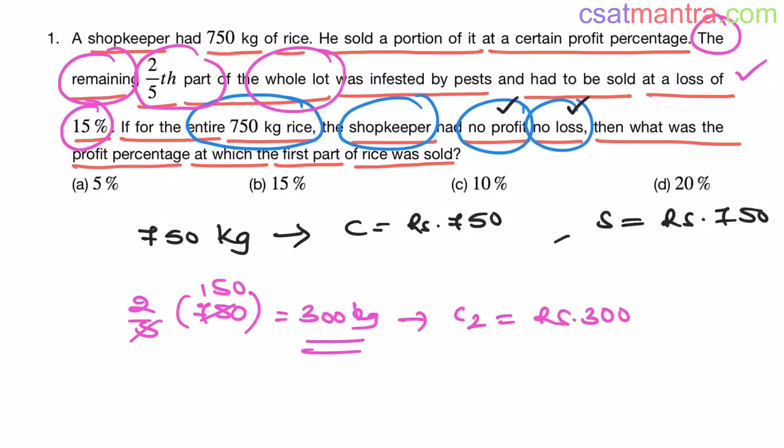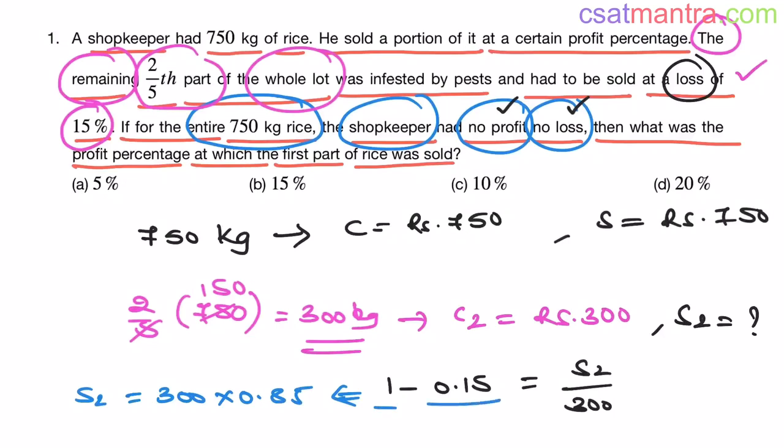Now, we can find out the selling price from the formula. 1 minus 15 percentage. That is 0.15 negative because it is loss. S2 by C2. So, S2 is 300 into 0.85. 1 minus 0.15 is 0.85. So, 300 into 0.85.